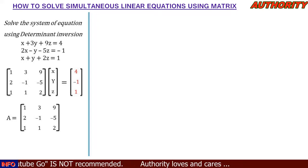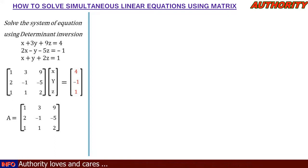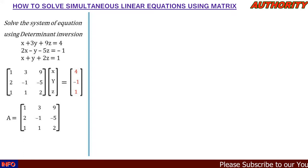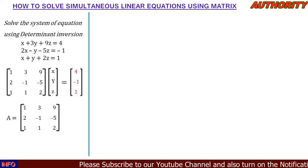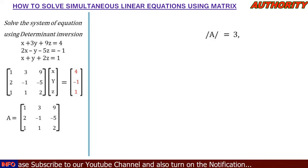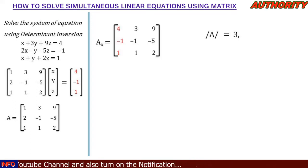The coefficient matrix A is [1, 3, 9; 2, -1, -5; 1, 1, 2]. We need to find the determinant of this 3x3 matrix. You can use the first principle or Sarrus' rule, as covered in a previous lesson. The determinant of A equals 3.